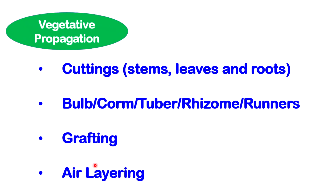Vegetative propagation has quite a number of examples and can be done artificially or naturally. It is typically among plants, and once you hear the word vegetative, you're talking about the different parts of plants such as the leaves, stems, and roots. Cuttings, for example, can be done with stems, leaves, and roots. You also have it with buds, bulbs, corms, tubers, rhizomes, and runners. Vegetative propagation can also be done by grafting, which is cutting a piece of stem and tying it onto another stem so it eventually grows into a new plant.